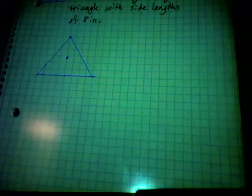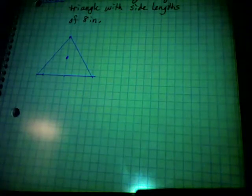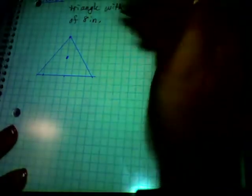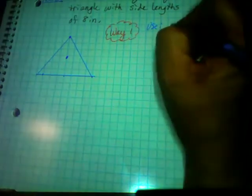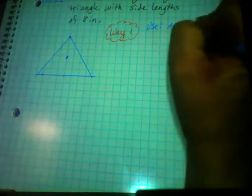A triangle creates 3 central angles from its center; a quadrilateral 4, pentagon 5, hexagon 6 — the number of central angles equals the number of sides. Way one: use Area = ½PA.